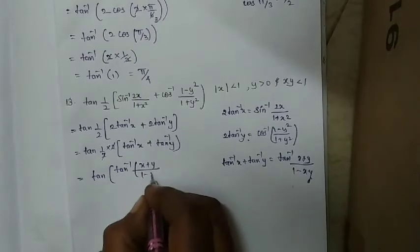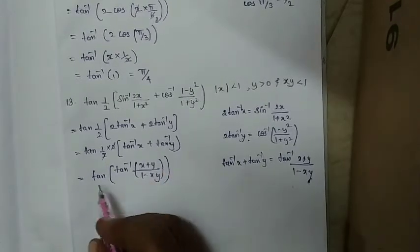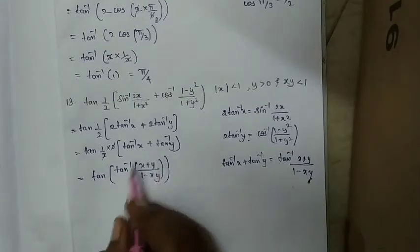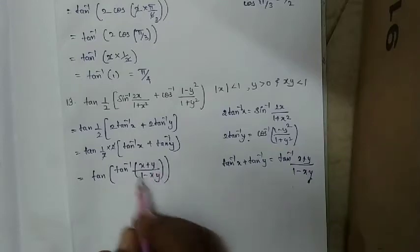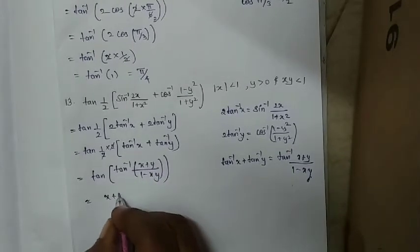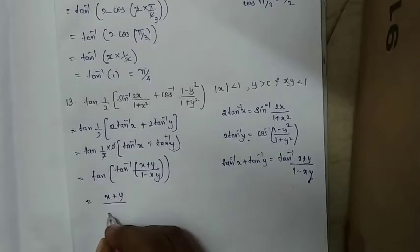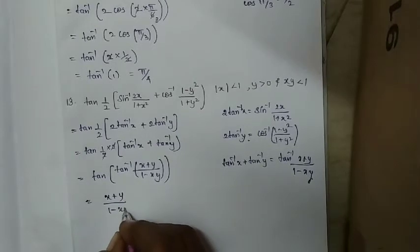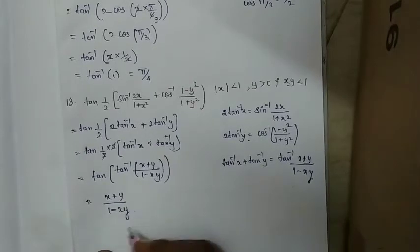This becomes tan of tan inverse((x+y)/(1−xy)). Since tan of tan inverse equals the argument itself, the final answer is (x+y)/(1−xy).